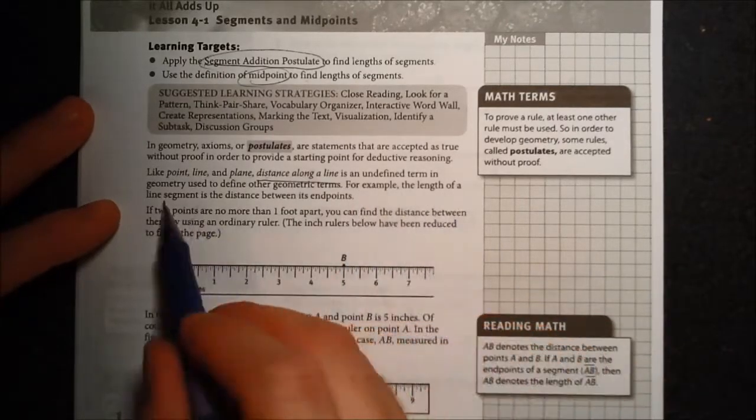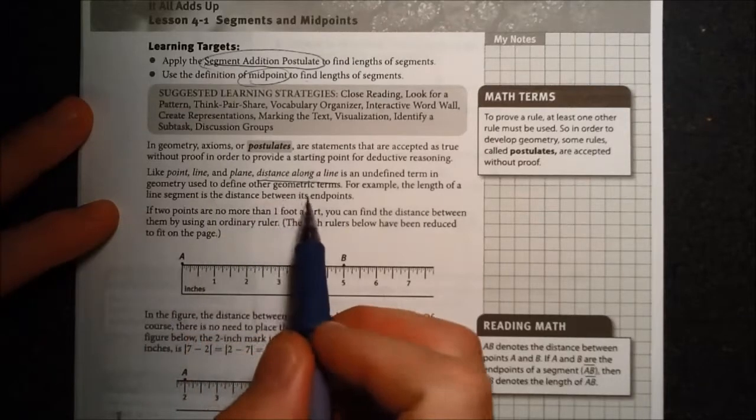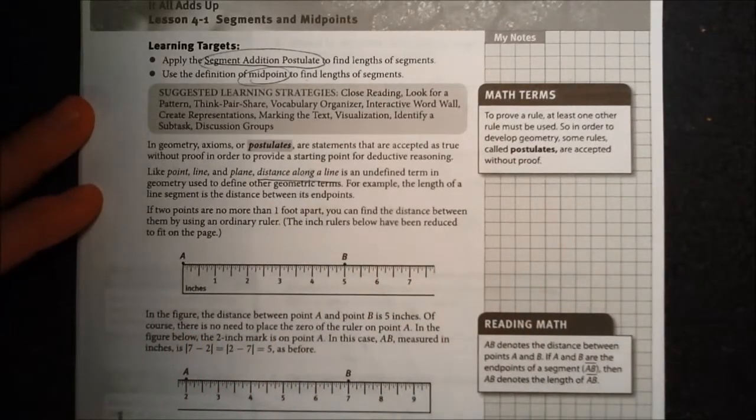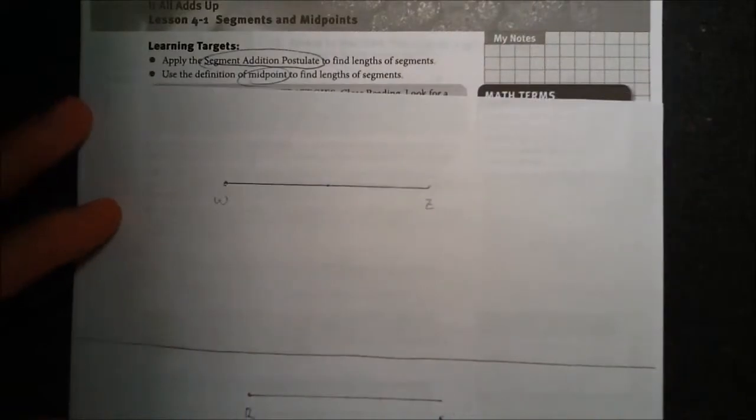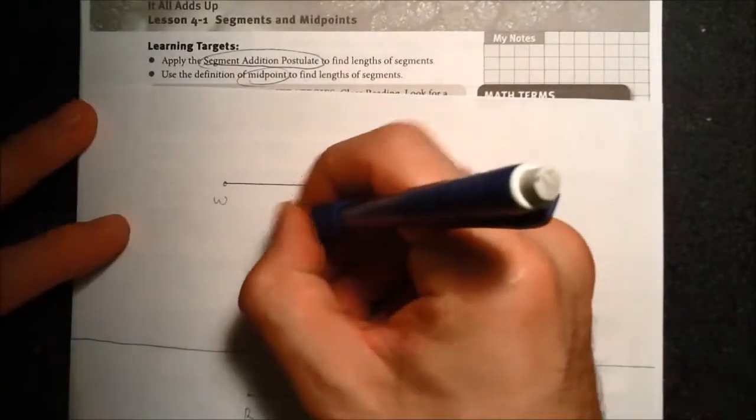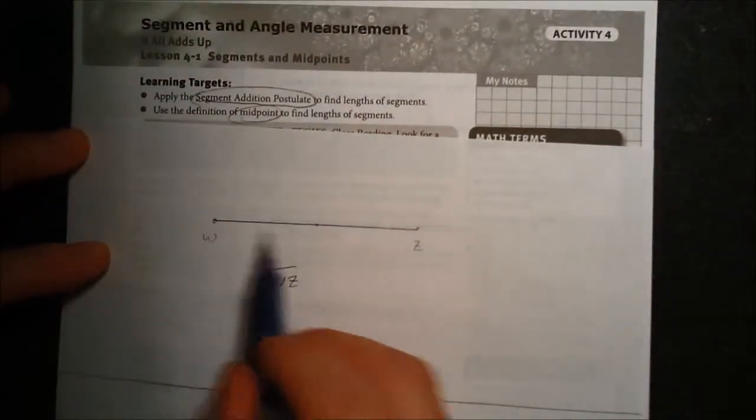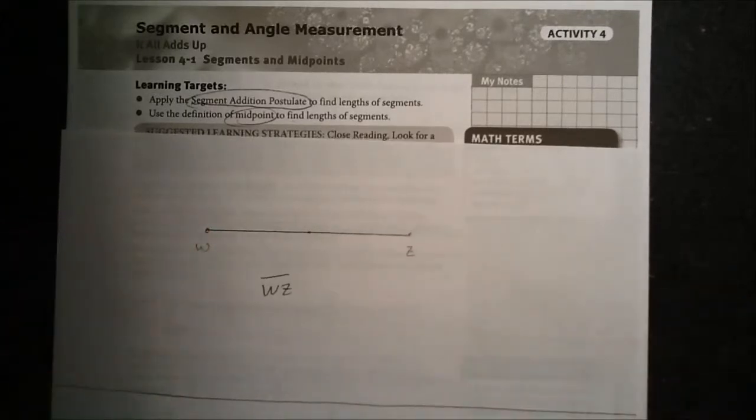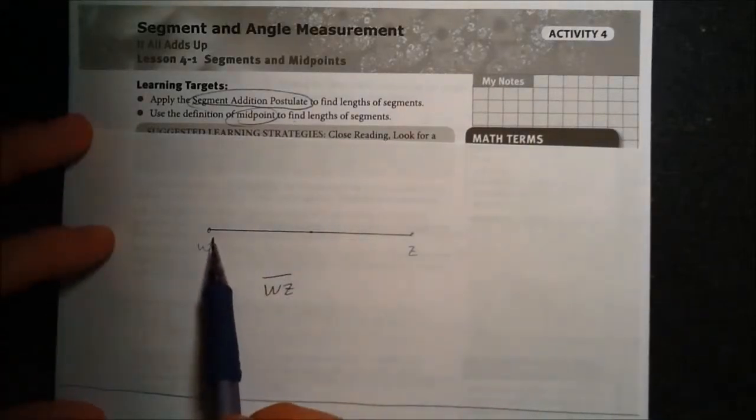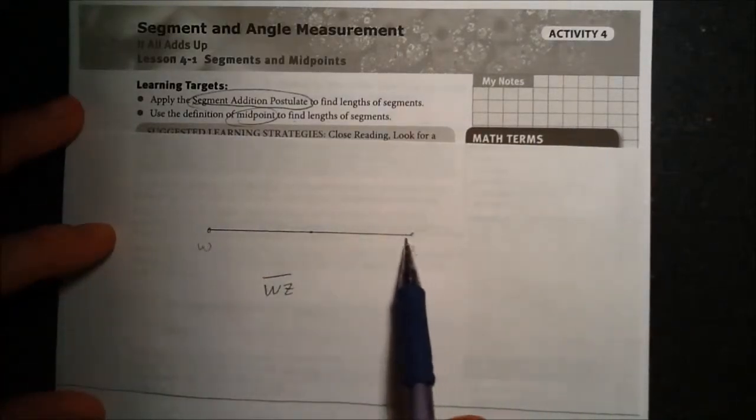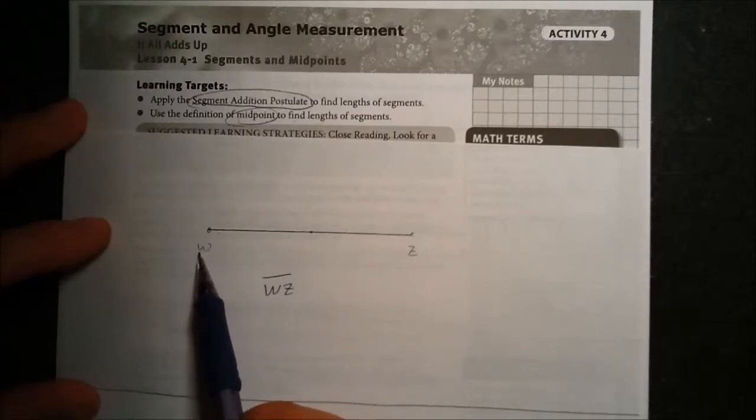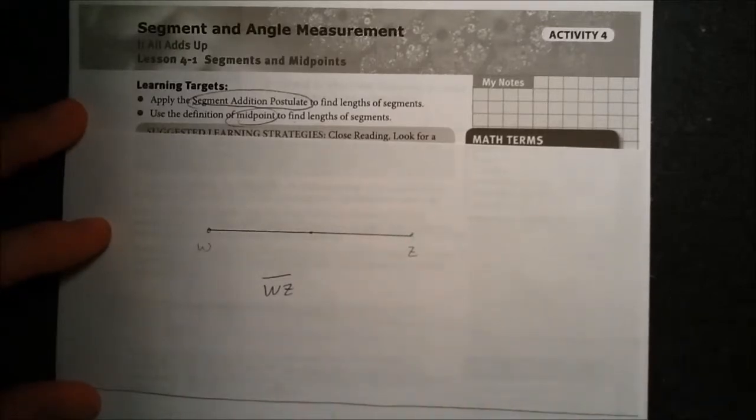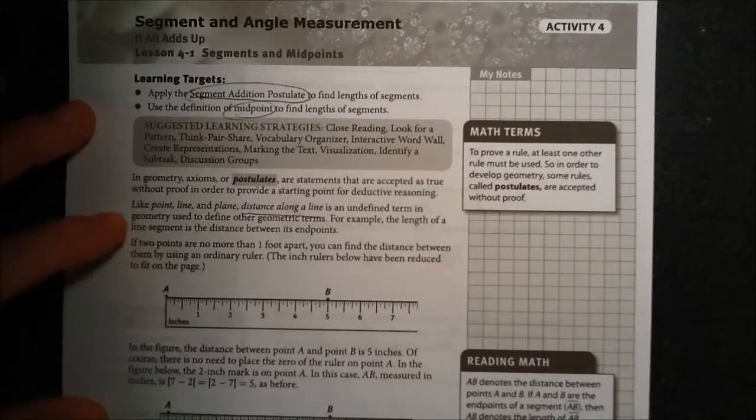For example, the length of a line segment is the distance between its endpoints. So if I had some segment here, this is segment WZ. We refer to the length of this segment as the distance between the two endpoints. So we refer to that, the distance between these two endpoints, it's also the same thing as saying that's the length of segment WZ. And that's exactly what this is saying.